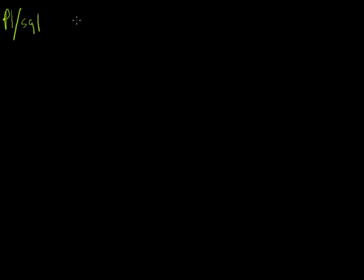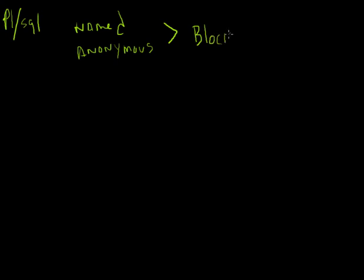In this video we're going to take a look at two of the main pieces inside of PL/SQL — those are called named and anonymous blocks. When writing PL/SQL code, the two basic choices you have are to write what's called a named block or an anonymous block. What are the differences between these two?